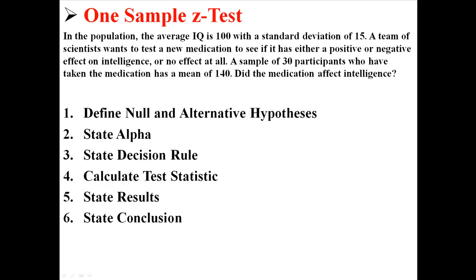Here's our example, and there are six main parts to doing this test. It might be different depending on your teacher or class, but by doing these six steps, we'll go through all the same processes. First we're going to define our hypotheses, then we're going to state our alpha level, we're going to state our decision rule, calculate the test statistic, state our results, and then state our conclusion.